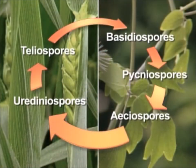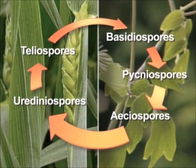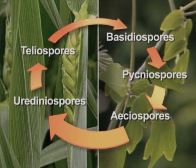So the complete life cycle of leaf rust includes five spore stages. Puccinia recondita is macrocyclic.